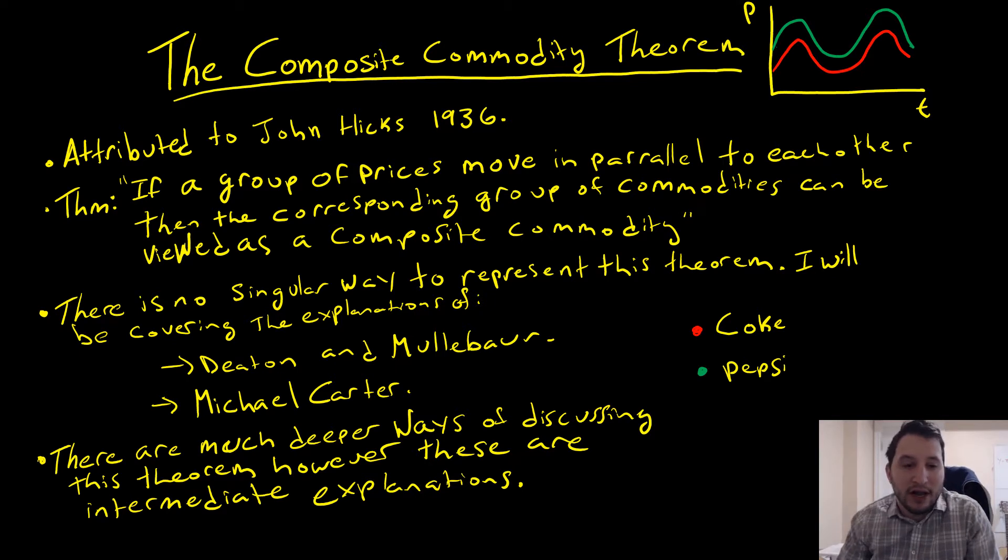So this is attributed to John Hicks in 1936. And what the theorem says, well, it's not really a mathematical theorem, but if a group of prices move in parallel to each other, then the corresponding group of commodities can be viewed as a composite commodity.